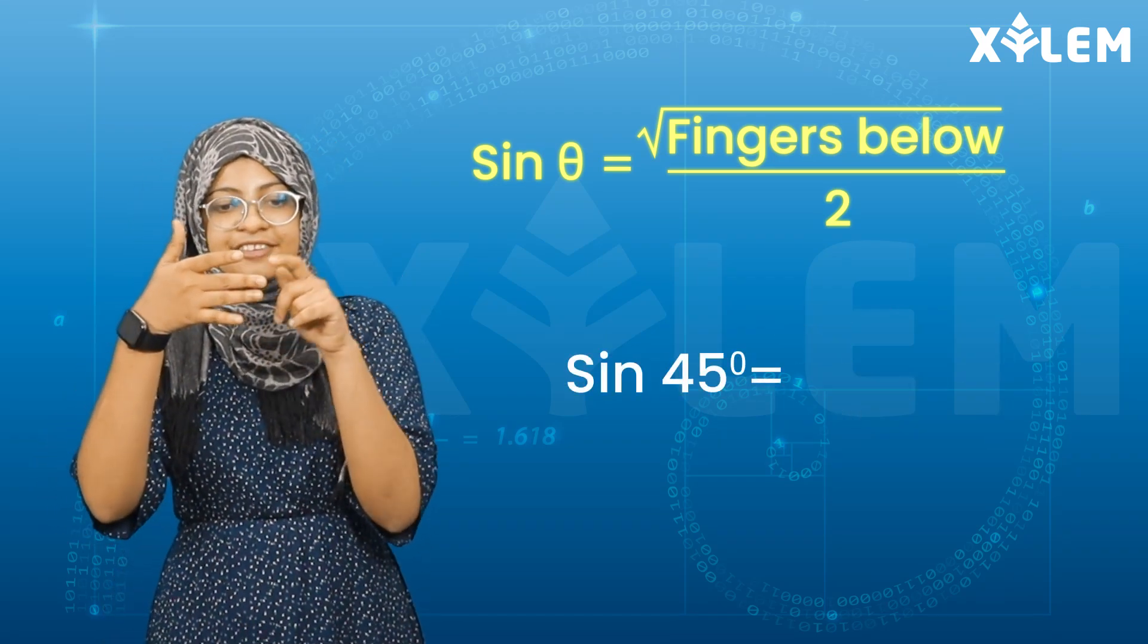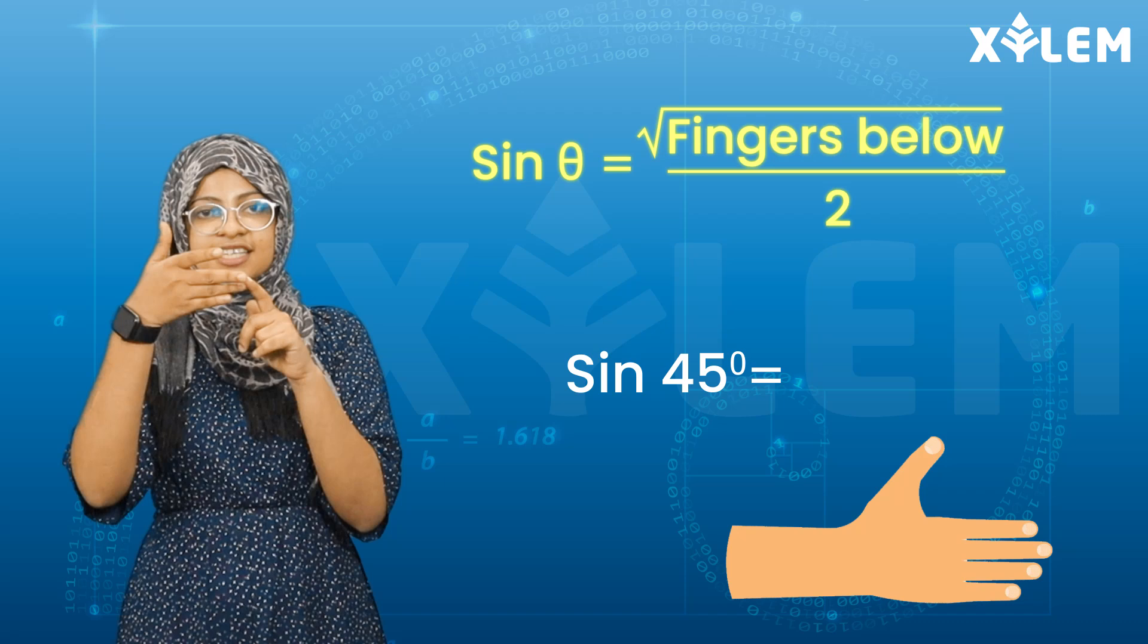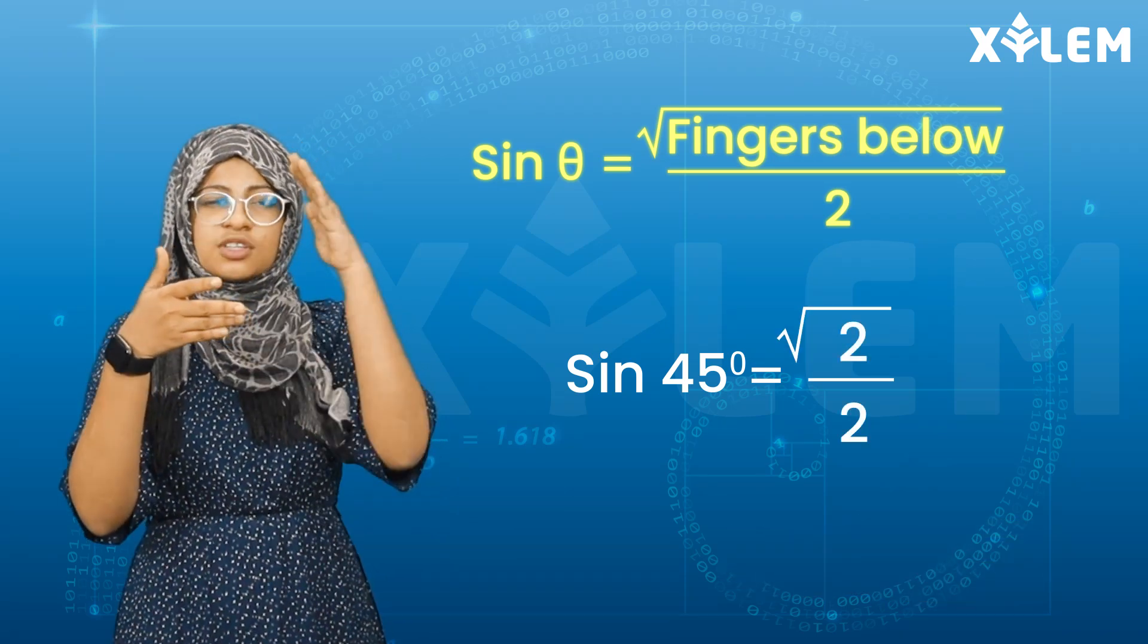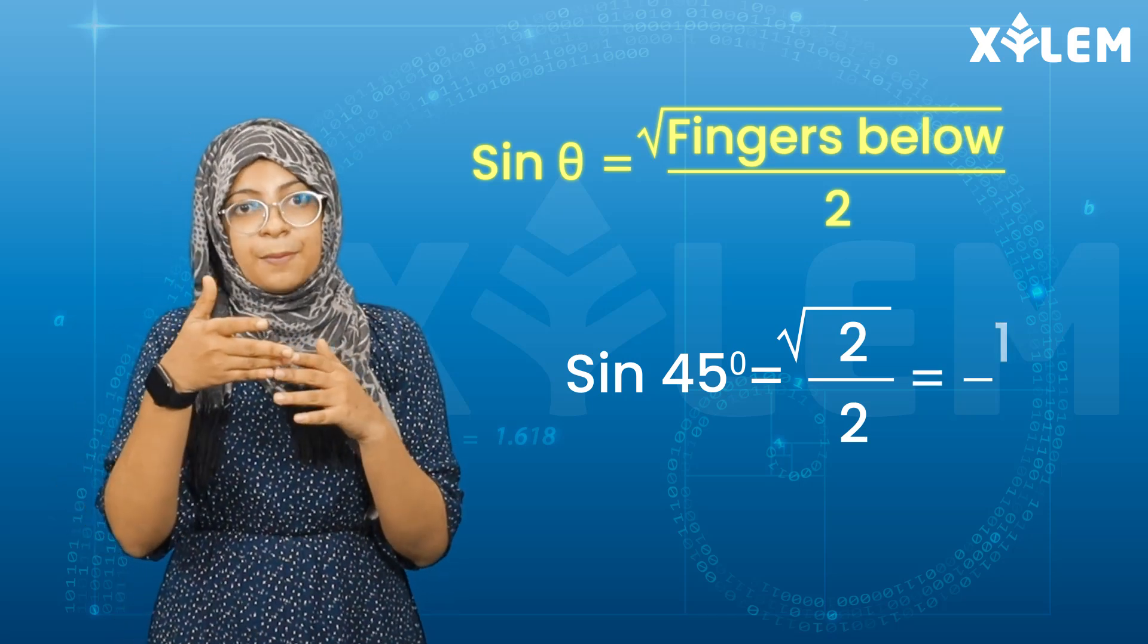Sin 45°. How many fingers are below? Two fingers. So root of 2 divided by 2. The answer is 1 by root of 2.